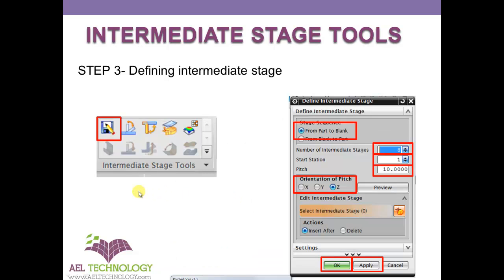Next is to define intermediate stages. To develop a part from the component to a flat blank, sometimes there will be an intermediate stage. If the component is very simple there will be very few intermediate stages; if the component is very complex there will be many. To define the intermediate stage, click this icon and this window will pop up, then click on the radio button.